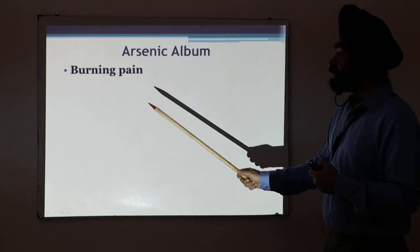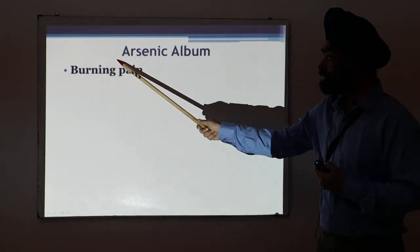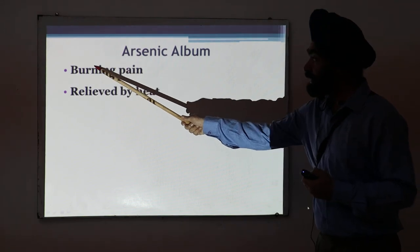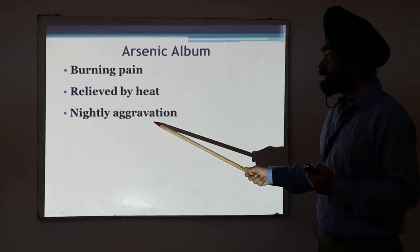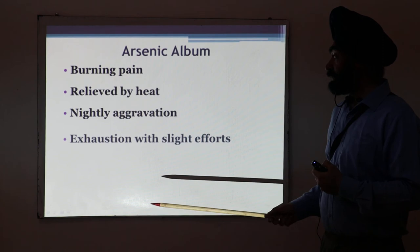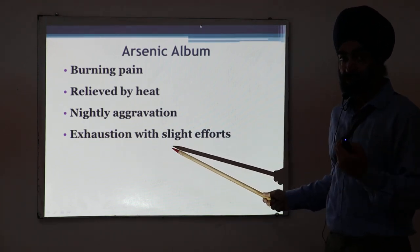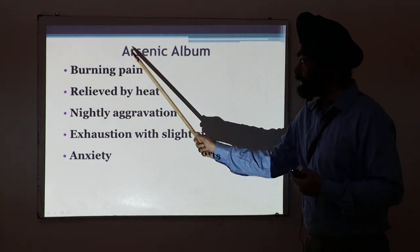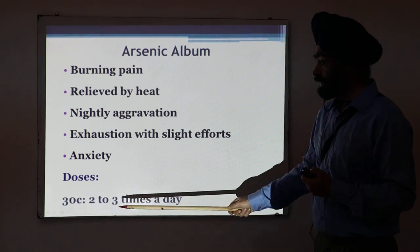The fifth medicine is Arsenic Album. The characteristic feature is burning pain — something like a burning heat sensation. This burning pain is relieved by heat. Another important indication is nightly aggravation — the pain is more intense at night when the person is in bed. The person is also exhausted with just a little effort, and there is anxiety. Nightly aggravation, exhaustion, and anxiety are typical features of Arsenic Album. Dose: 30C or 200C.